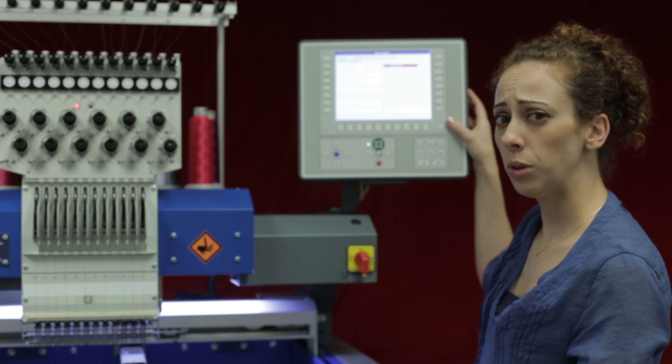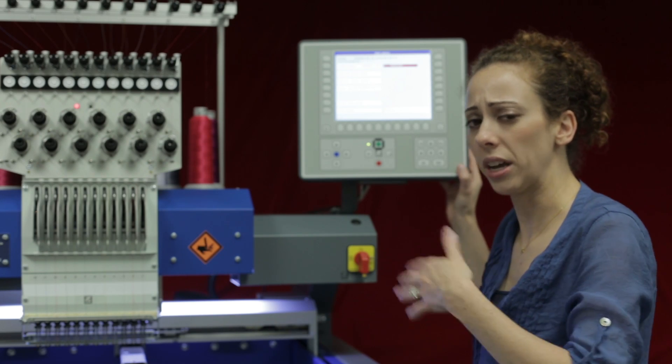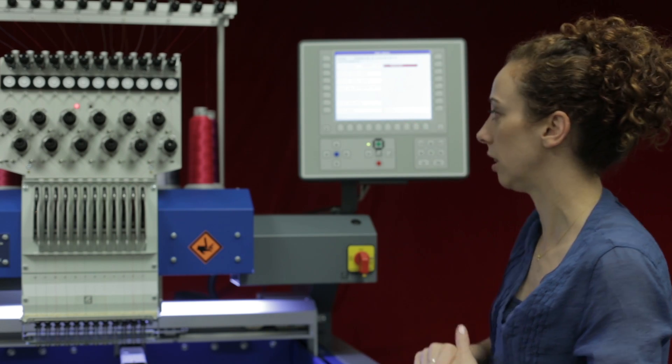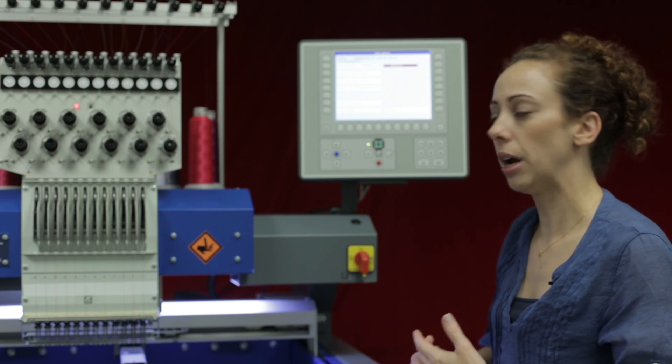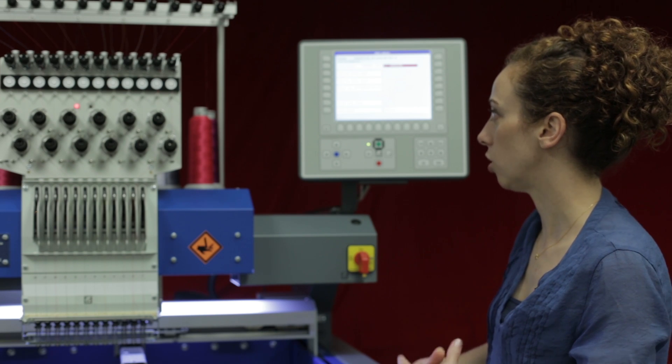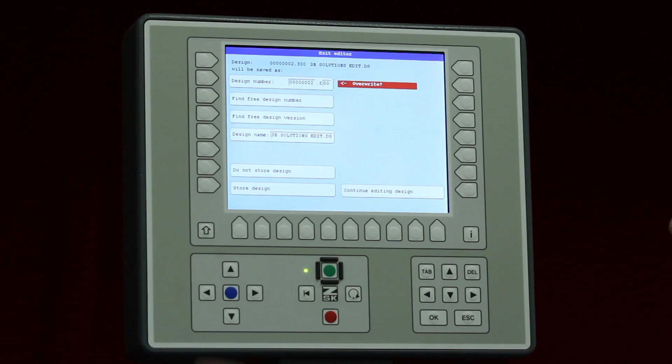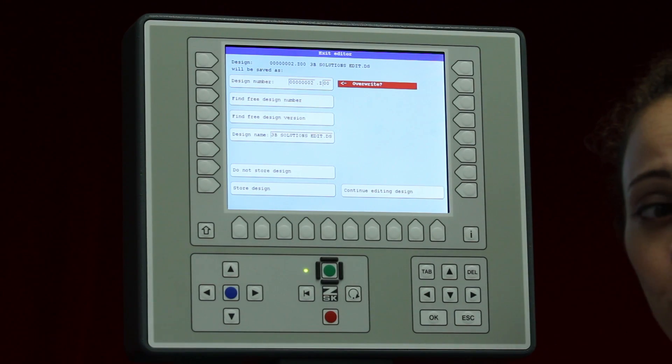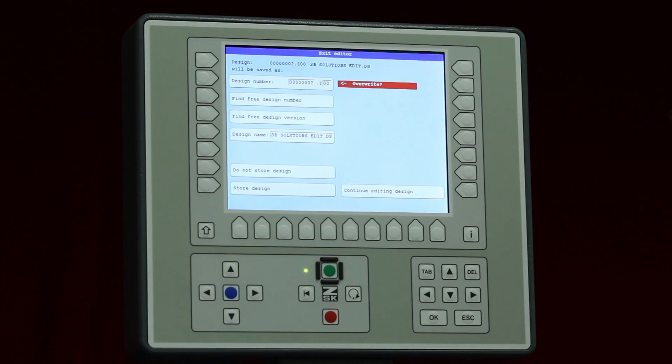I can continue editing. I forgot, hey, I need to go back in to another menu. I can always hit continue editing design, but this time I want to go ahead and save it as a new version. Free design number, we will put it in a new slot in that controller as far as the number slot.